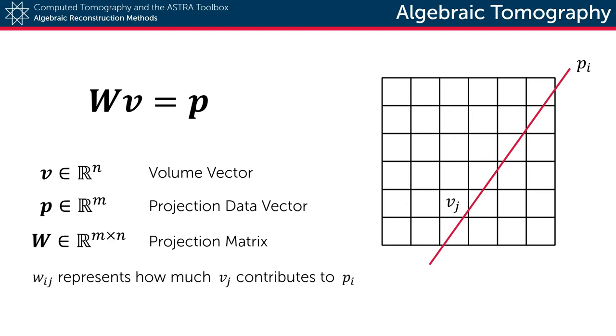W is an m times n matrix which we refer to by projection matrix, and it basically links a certain volume geometry to a certain projection geometry.